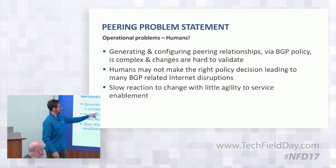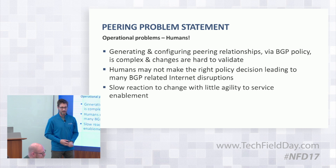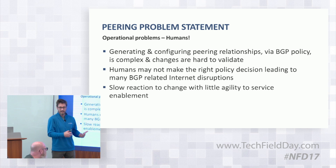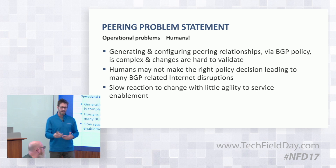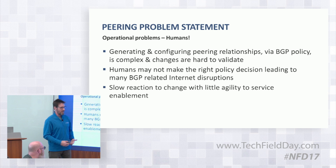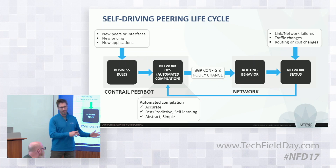As Guru said, the problem is humans. I have a different way of describing what I want to do and a different way of writing BGP policy than Guru would. He has his technical religions and I have mine — I like AS paths, he likes communities, someone else likes MEDs. None of that translates into any type of business policy. So how can we generate and compile BGP policy configuration without having to understand the semantics of BGP as humans?